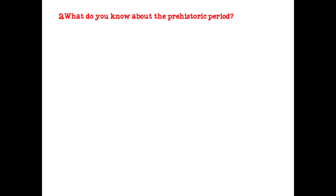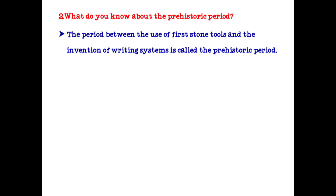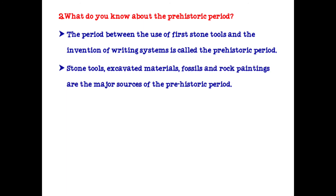Second question: what do you know about the prehistoric period? The period between the use of the first stone tools and the invention of writing systems is called the prehistoric period. Stone tools, excavated materials, fossils and rock paintings are the major sources of the prehistoric period.